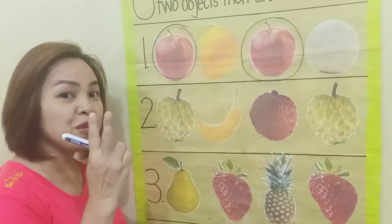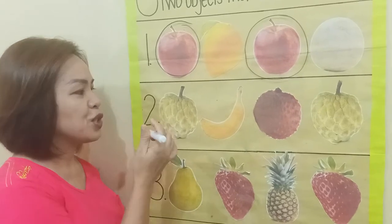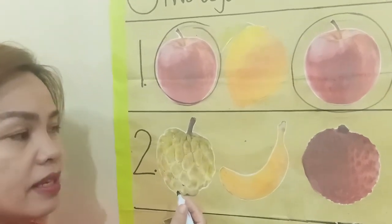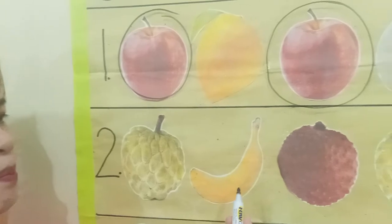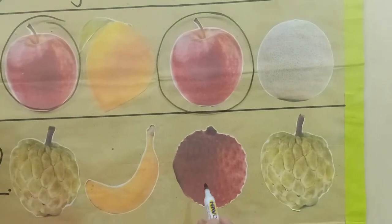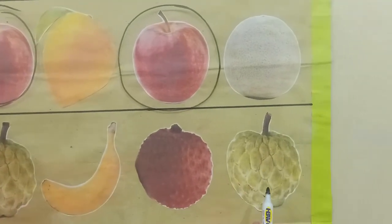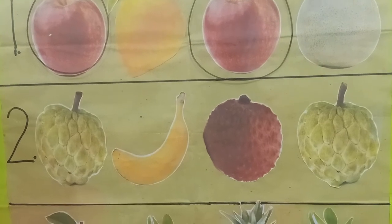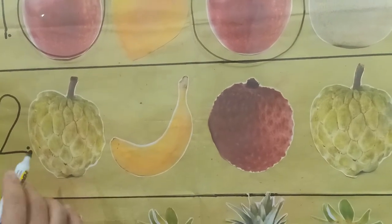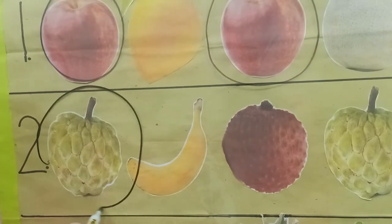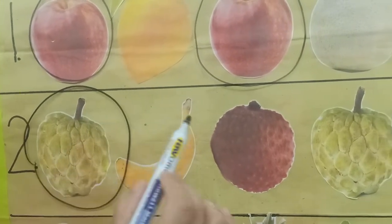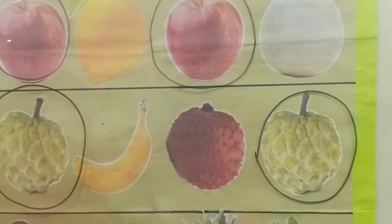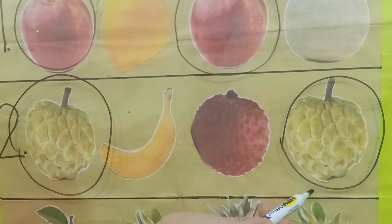Number two: sugar apple, or locally we say atis, banana, lychee, sugar apple. Sugar apple and another sugar apple. These are alike.